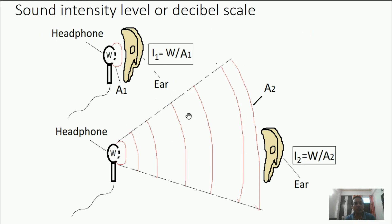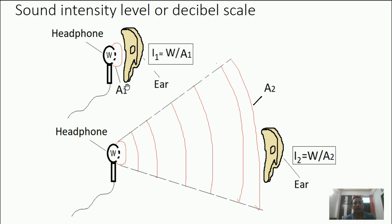Now, we are going to learn what is decibel scale. The decibel scale is also called sound intensity level. Now, what is sound intensity? You would have observed — this is the headphone. When we apply a headphone to listen to music, in case it is closer to our ear, we are able to hear the sound. But in case you are keeping the headphone far away from the ear, we hear no sound. What is the difference? In both cases, the power used to develop the sound is the same. In the second case, why are you not able to hear the sound? Because when the headphone is far away from our ear, the sound intensity which reaches our ear is less as compared to that when the headphone is closer.